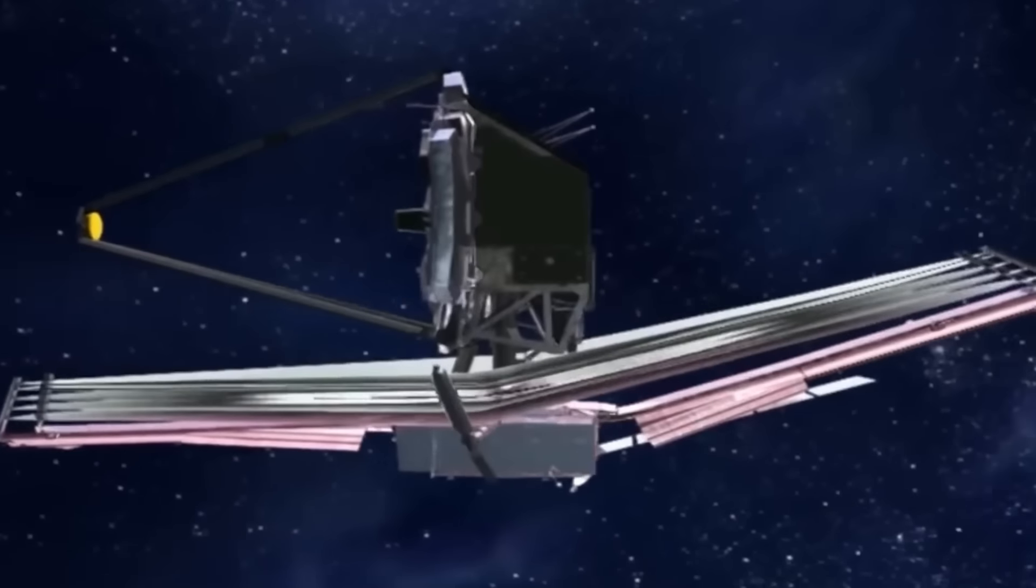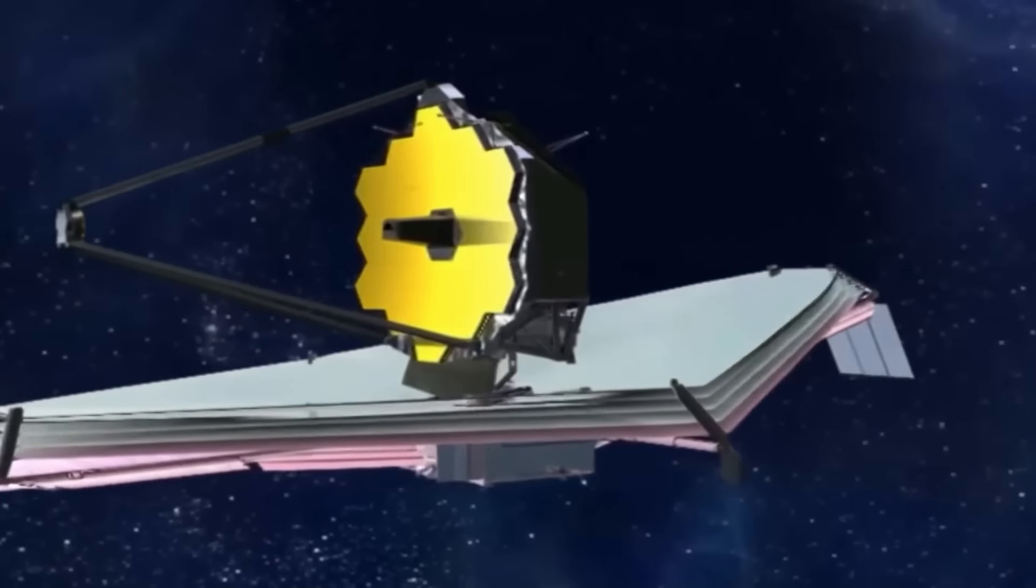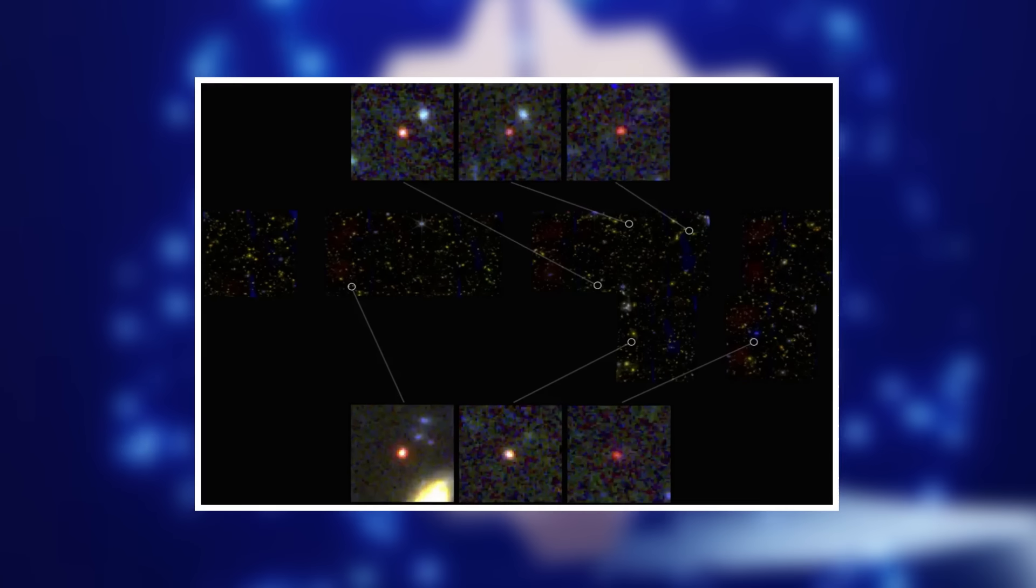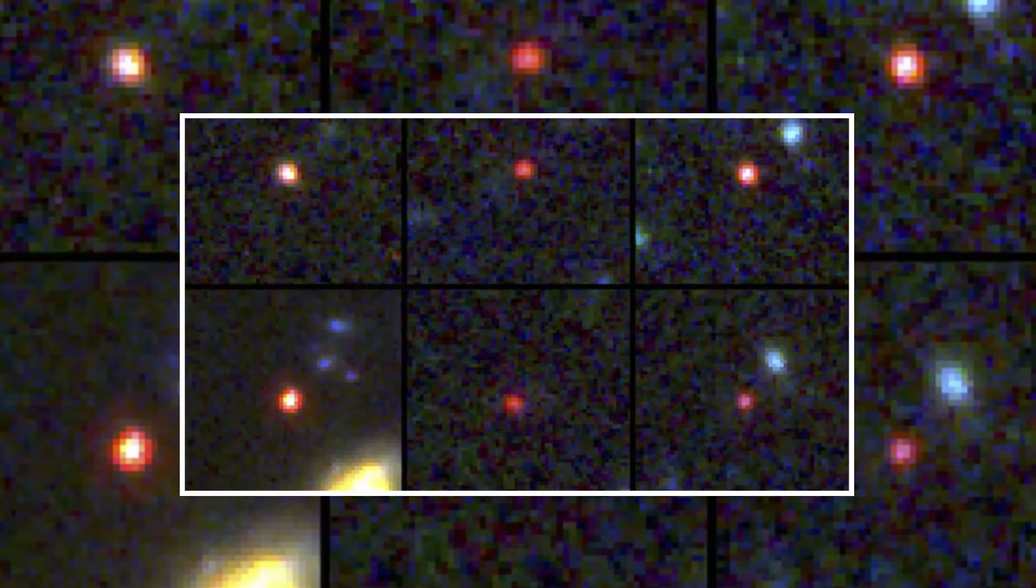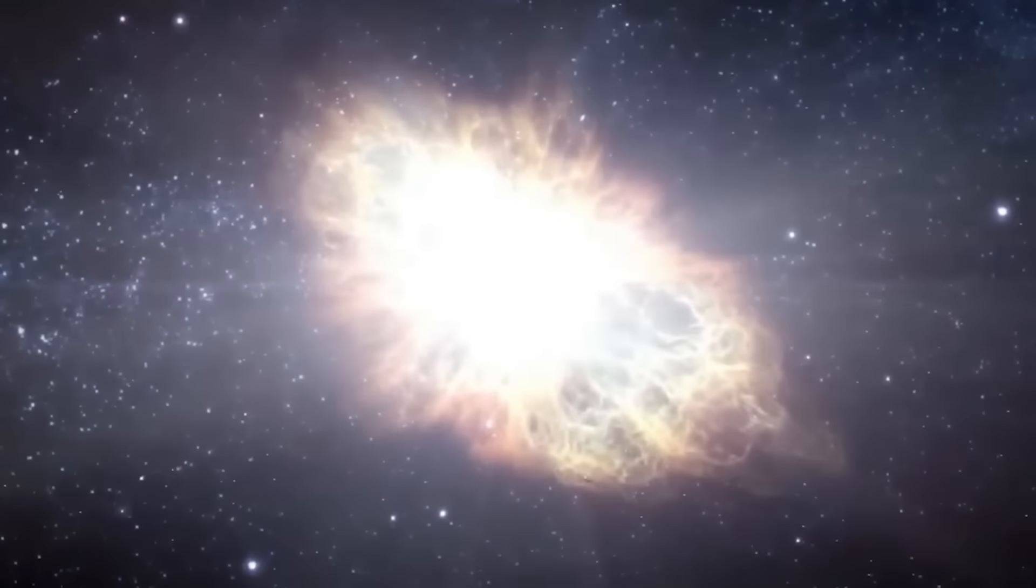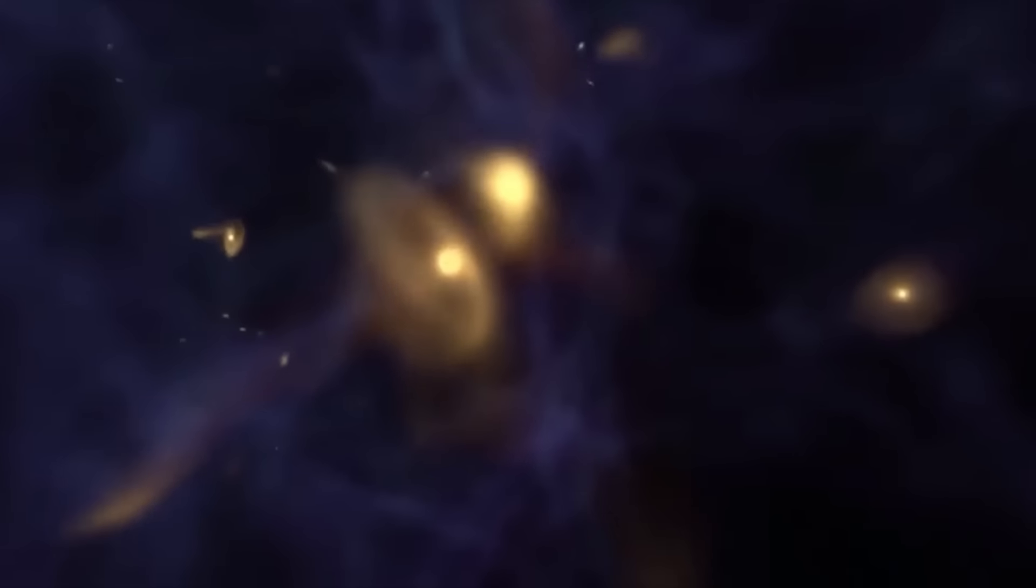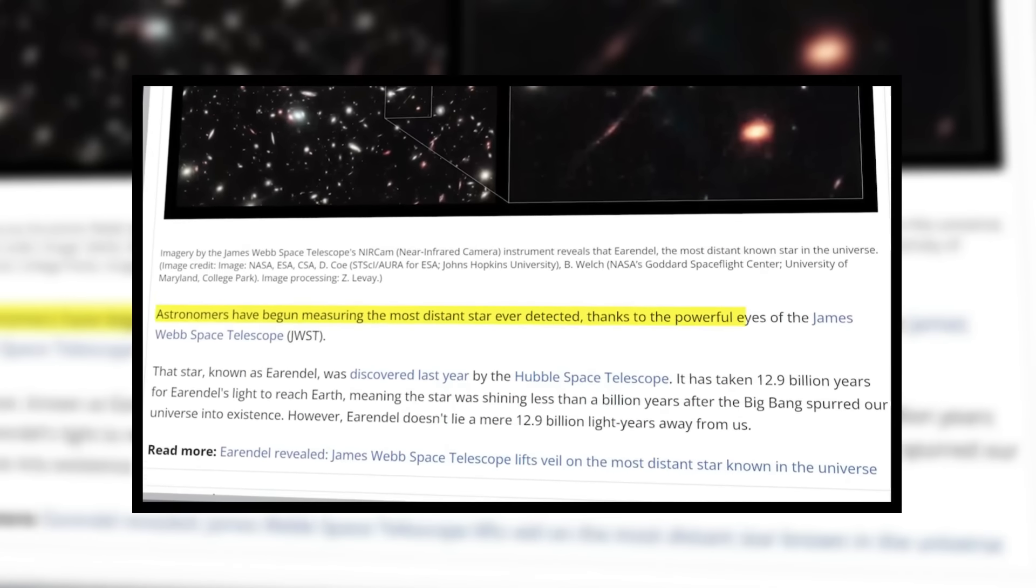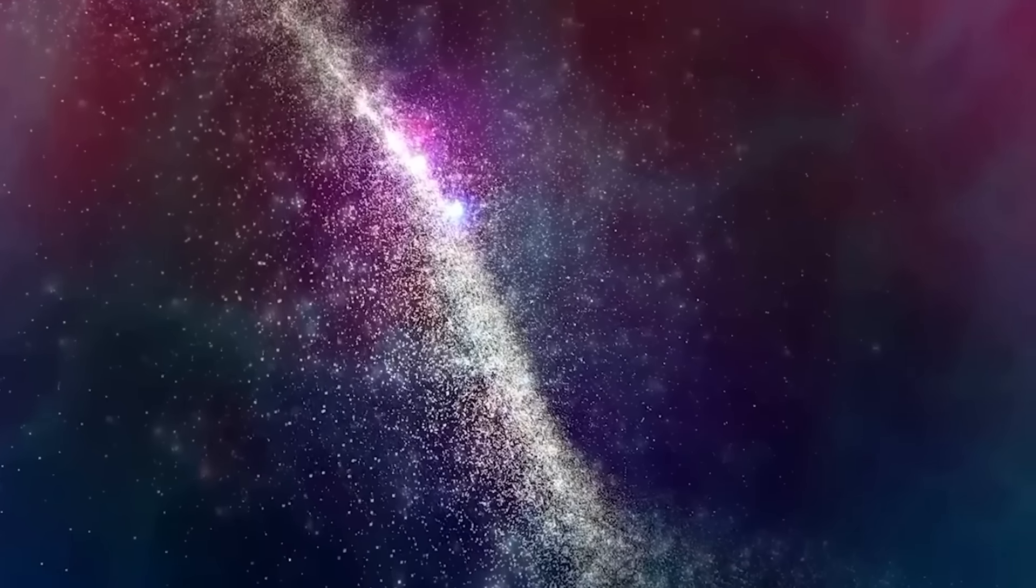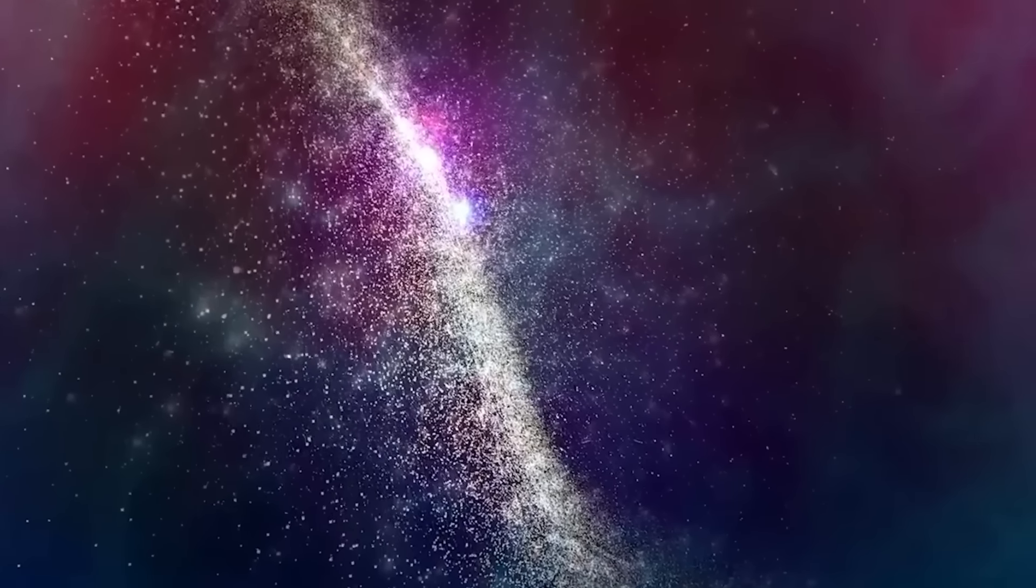Astronomers have used the James Webb Space Telescope to explore the early universe and found something they didn't expect. The Space Telescope found six very large galaxies that were around 500 million to 700 million years after the Big Bang. According to a new study published in the journal Nature, the finding is completely changing how people thought about how galaxies were made. These things are much bigger than anyone thought they would be.